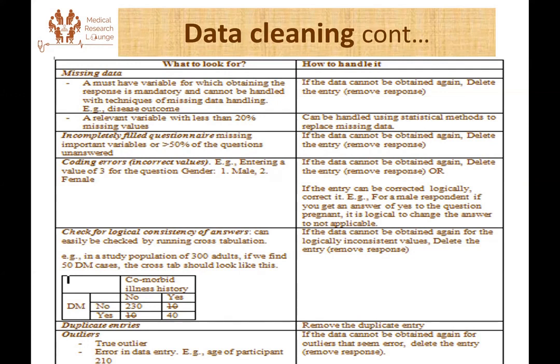The first thing you can encounter is missing data. When we have missing data, there are different ways of handling it. The first is if the variable is a must-have variable — meaning it could be our dependent variable or a very important independent variable that we want to analyze.